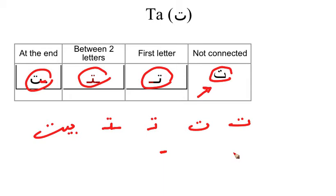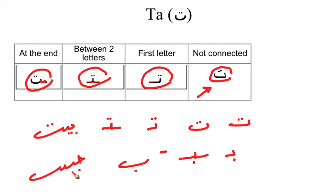In the case of the letter BA, if BA is at the end — let us see the word HABEEB. HA-B-YA-B. HABEEB, which means lover. HABEEB has two BA letters — one as a middle letter and one at the end. This is the dot that belongs to the first BA, and this is the dot for the second BA. You can see it clearly.